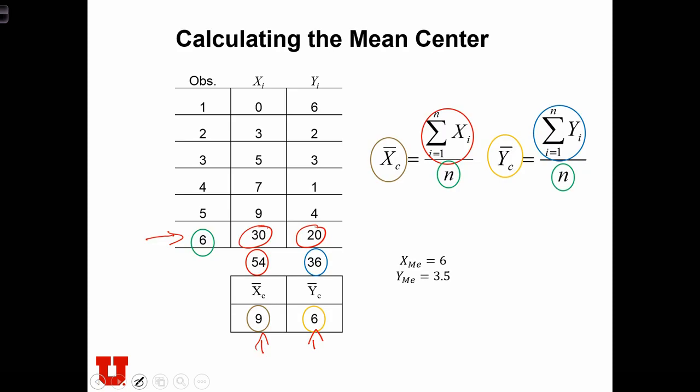An alternative to that is just simply using the median center or calculating the median of the x values. So if we were to sort these x values and find the median, there are six values. So the middle values, and these are in sorted order already, is between 5 and 7. So we get an x median of 6. And if we were to sort the y's and find the middle two, they would have a median of 3.5.